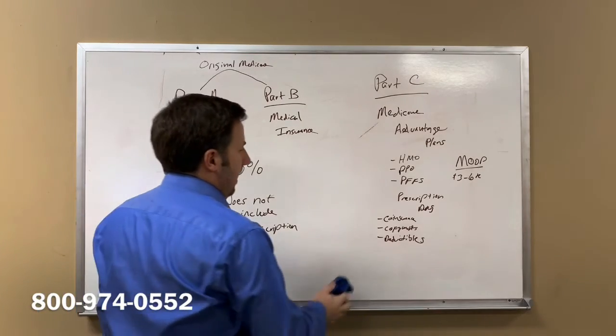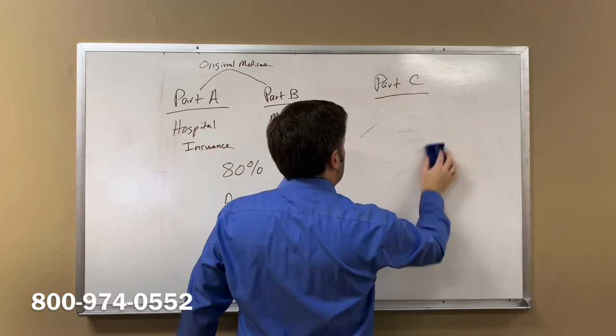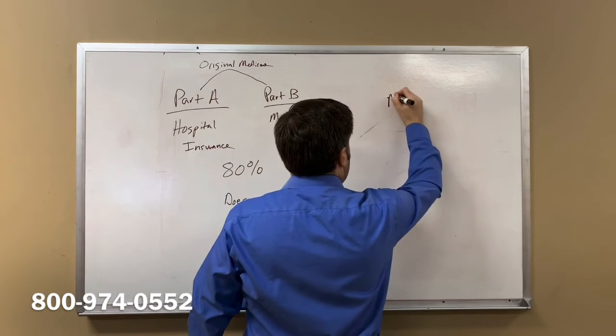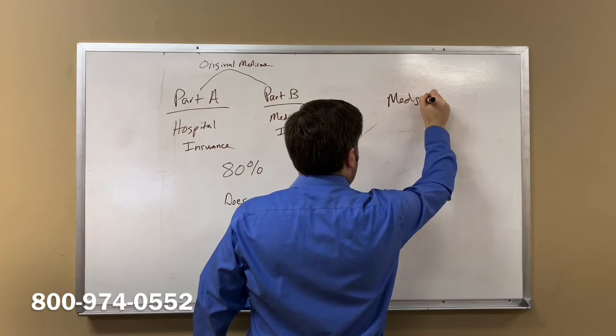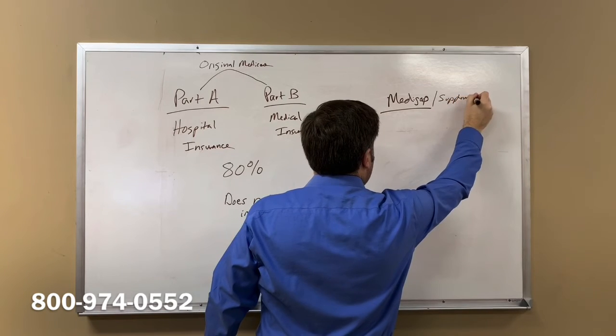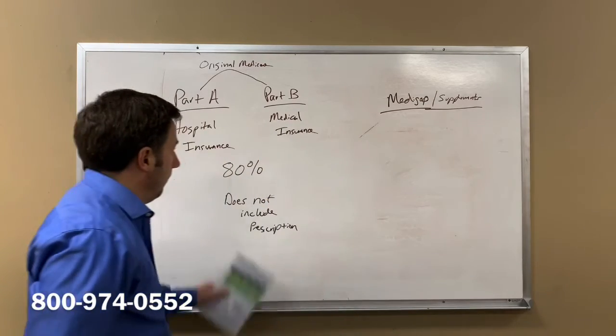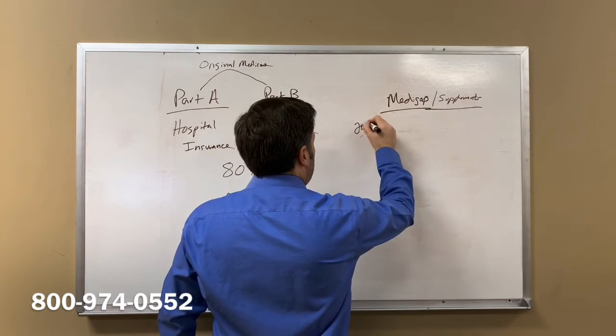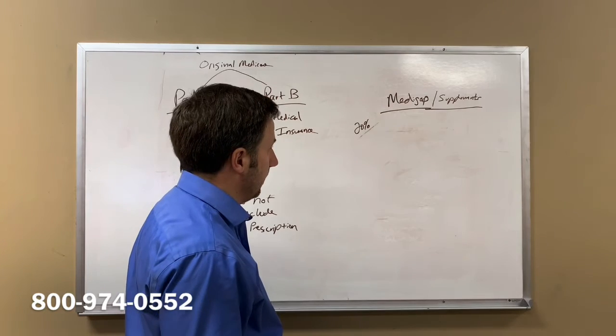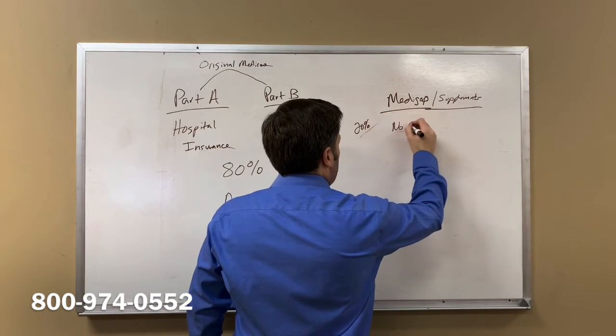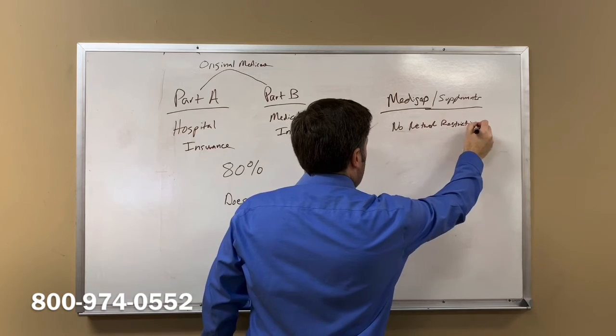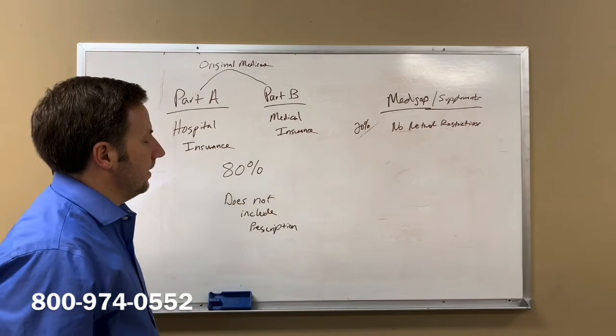The other option that you would have is that you would stay on Original Medicare, so your Part A and Part B, and then you would purchase a Medigap plan. Medigap, or they're also called supplements, cover the remaining 20% not covered by Original Medicare. The nice thing about Medicare supplements or Medigap is there's no network restrictions, meaning you can go to any provider in the United States that accepts Original Medicare.